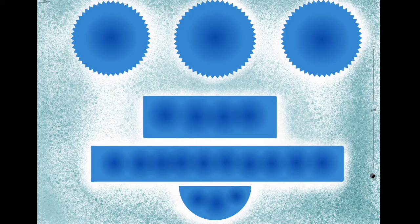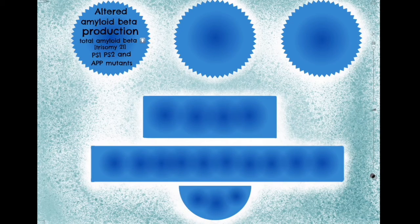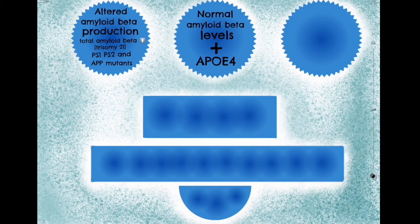Alzheimer's disease can be classified into familial and sporadic forms. Familial Alzheimer's is associated with mutations in amyloid precursor protein, presenilin-1 and presenilin-2, and it is always an early onset disease, starting between 30 to 40 years of age. Familial Alzheimer's comprises just 5 to 10 percent of all cases. Sporadic Alzheimer's is far more common, comprising the remaining 90 to 95 percent of cases, and it is the result of interactions between genes and environment.